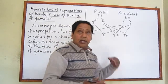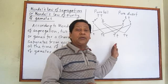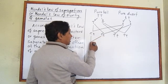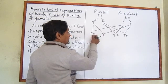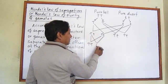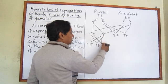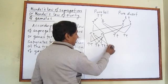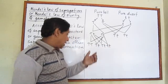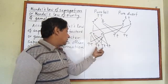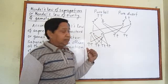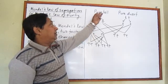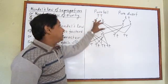Again, he self-pollinated the first generation pea plants. When these genes combine in different ways, we get different sets of genes. Looking at their genetic composition, one is pure tall, two are hybrid tall, and one is pure dwarf. Now he noticed that when they form gametes, at the time of gamete formation, two genes for a character separate from each other.